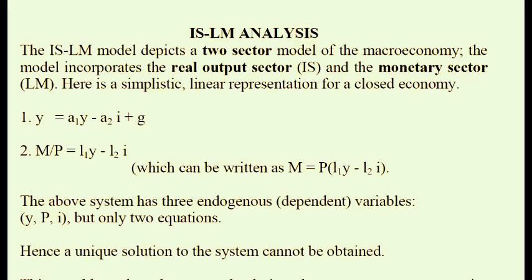Equation two is the equilibrium of money supply and money demand in real terms. On the right-hand side we have the demand for money, which is a positive function of output and a negative function of the interest rate. Because our model is linearized, we see the coefficients L1 and L2, but in the general functional form notation we'd say M is a function of Y (positive) and I (negative). The linearization helps make the arithmetic simpler.